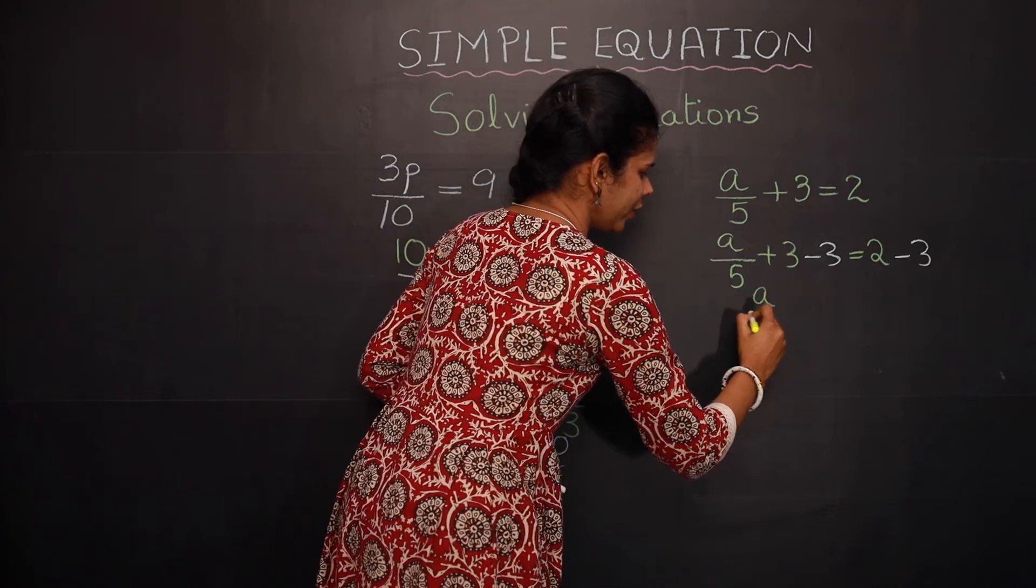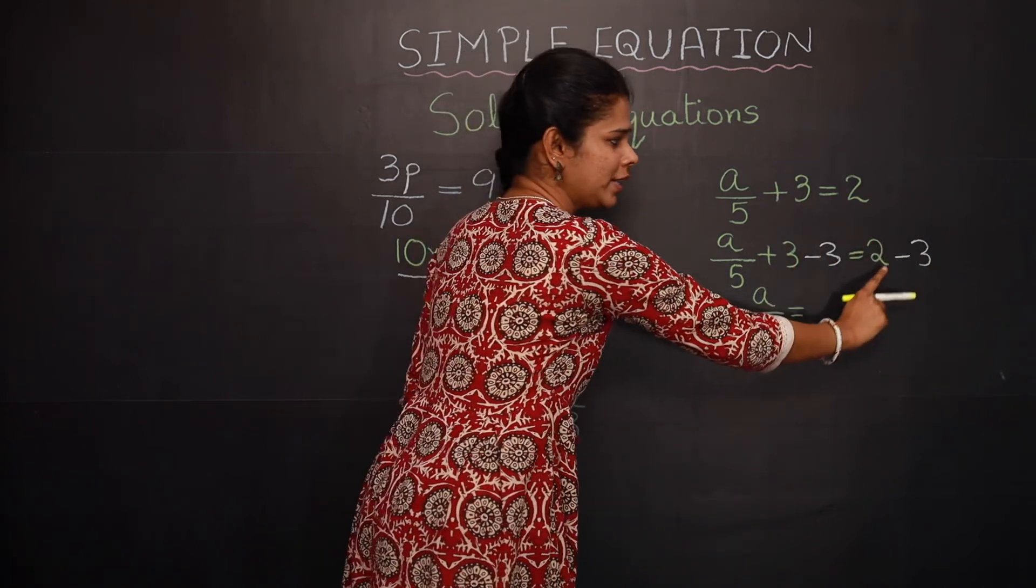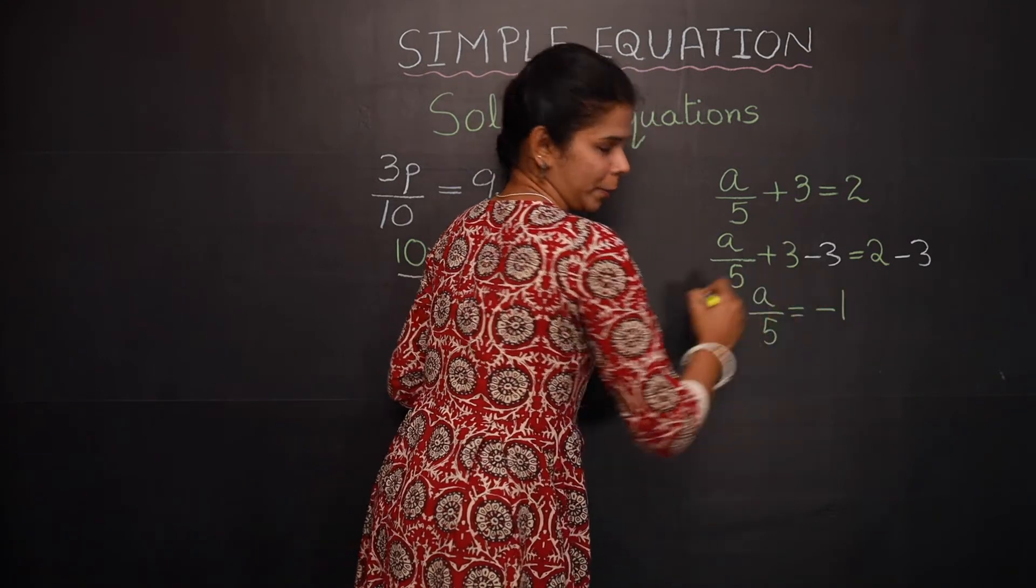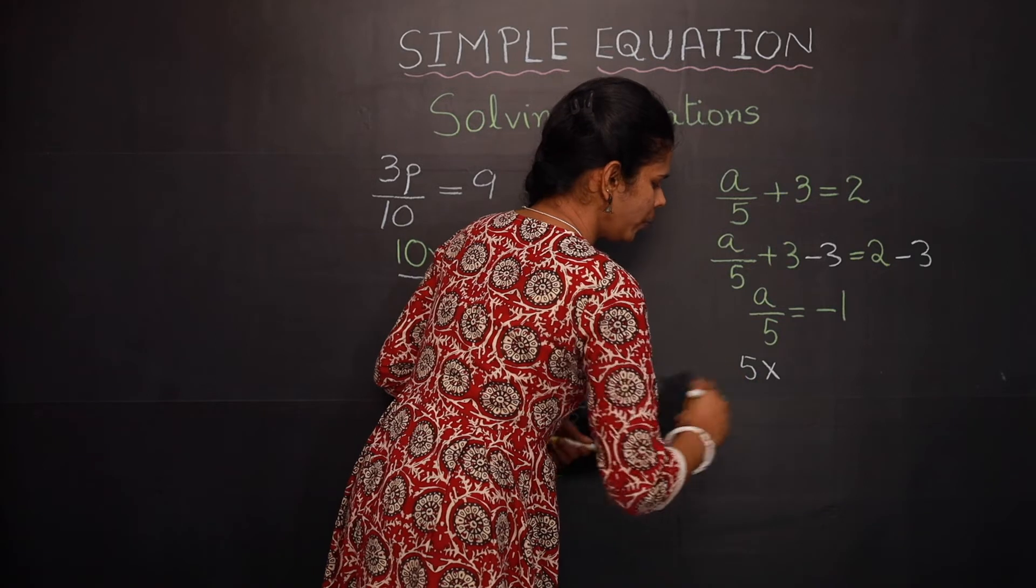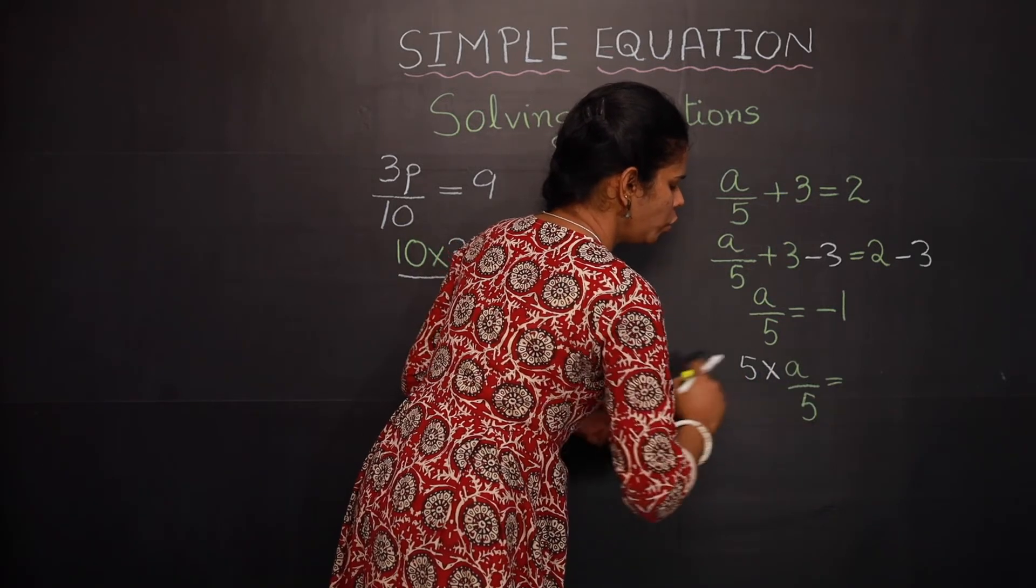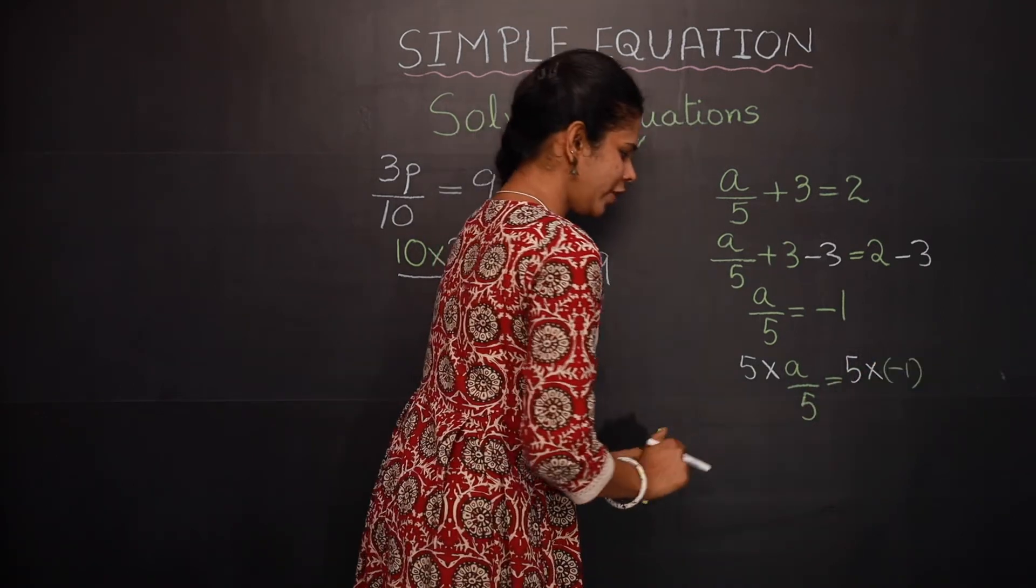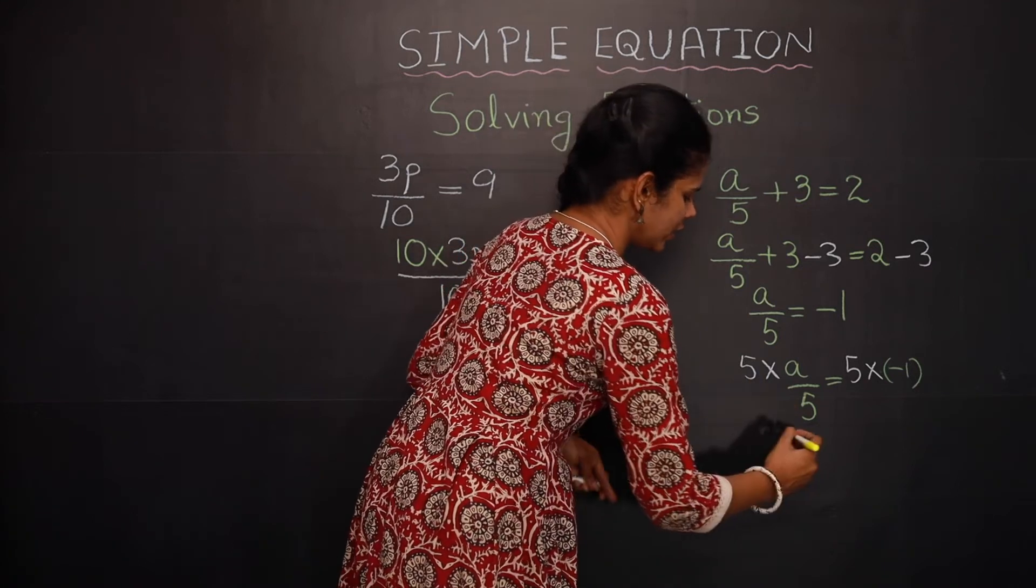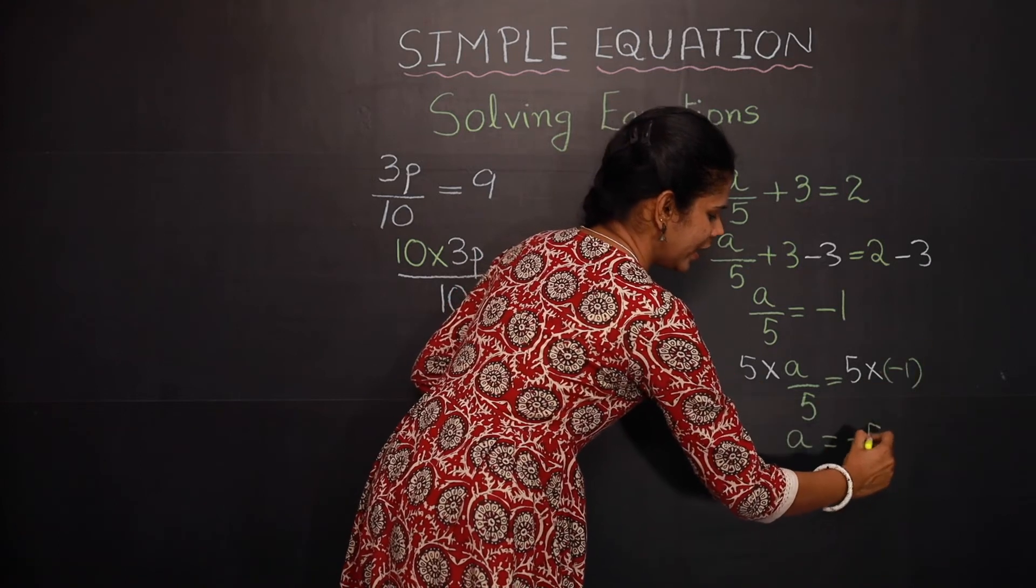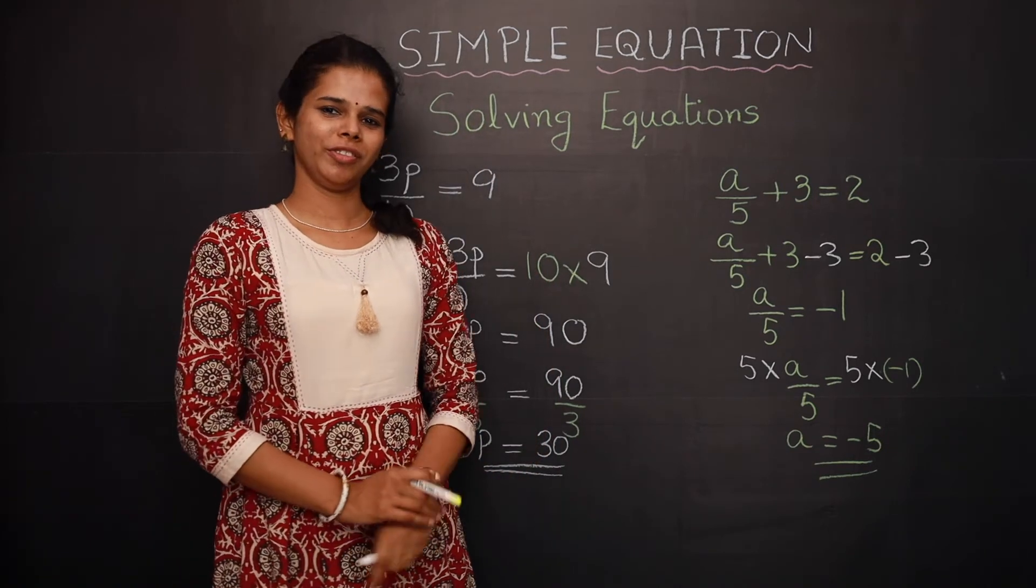So a by 5 is equal to 2 minus 3. So here you need to subtract and put the sign of bigger number, so it becomes negative 1. So here 5 into a by 5 equal to 5 into negative 1. So here 5 5 gets cancelled, so a is equal to 5 into negative 1, it is negative 5. So a equal to negative 5 is the solution of this equation.